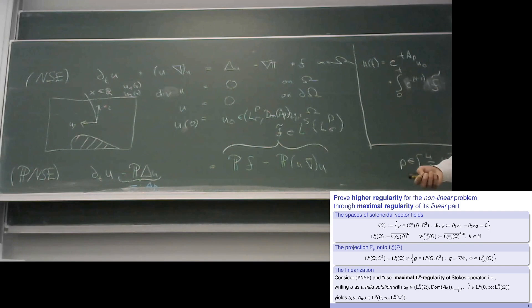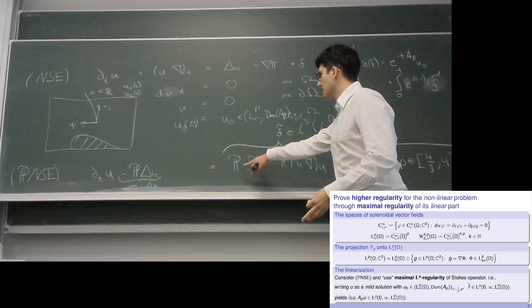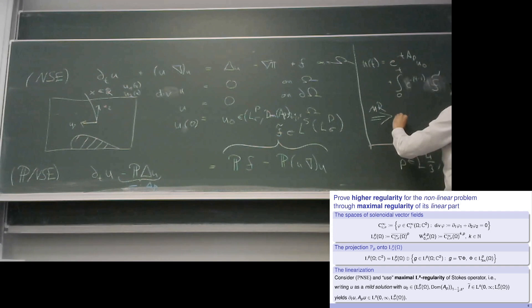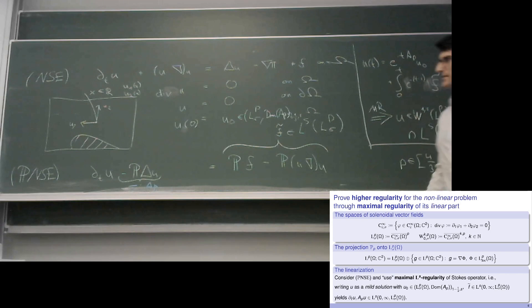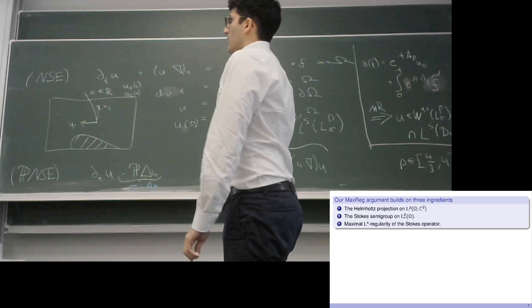This is just the interpolation space. Then maximal regularity tells us that our solution u is an element of W^{1,s} with values in Lp sigma intersected with Ls with values in the domain of A_p, with s still to be fixed.